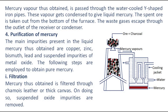Mercury vapor thus obtained is passed through the water-cooled Y-shaped iron pipes. These vapors get condensed to give liquid mercury. The spent ore is taken out from the bottom of the furnace, and the waste gases escape through the outlet of the receiver or condenser.